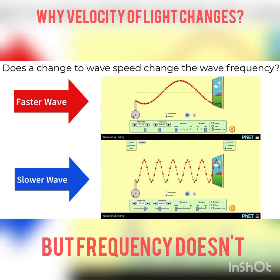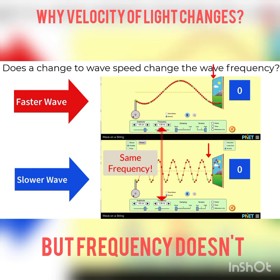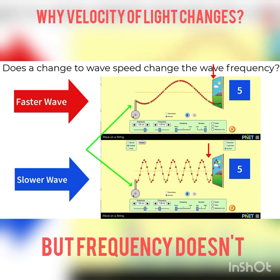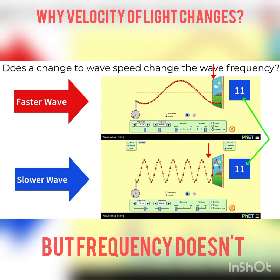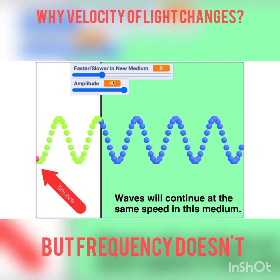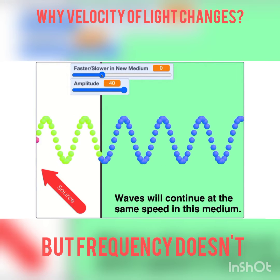Here we have a faster wave on the top part of the screen and a slower wave on the lower part of the screen. Notice that the frequency is the same — frequency is determined by the source of the wave — and you can see the piston on both screens oscillating at the exact same rate, with the same number of waves crossing through the window as well.